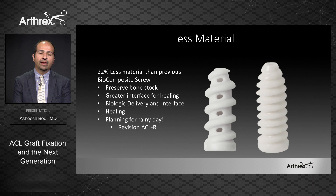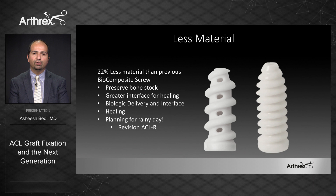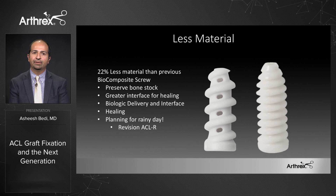Regarding material, it's important to have sufficient material for time-zero fixation, but we want to minimize the amount to permit ingrowth, be osteoconductive, and plan for the possibility of a revision ACL. The fast thread accomplishes this by having 22% less material than the previous biocomposite screw. This allows for a maximum interface for healing, still preserves the opportunity for biologic delivery through the vents, but again preserves bone stock for future cases.